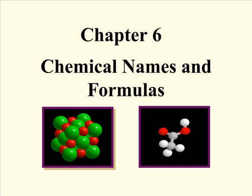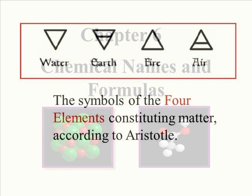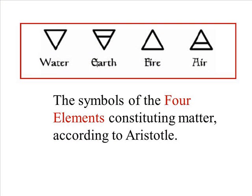We're going to start our chapter on learning to name and write chemical formulas. The symbols of the four elements constituting matter according to Aristotle were water, earth, fire, and air. Certainly it would be easier to write chemical formulas if that's all there was to it.